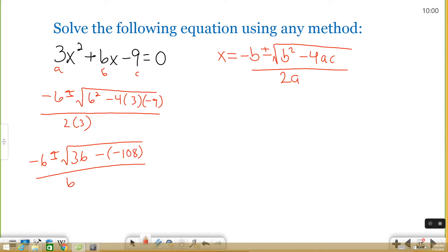Okay, so that's the next step. Let's keep going, keep simplifying. I'm going to jump up here now. We have negative 6 plus or minus square root. 36 minus negative 108 is the same thing as 36 plus 108, which is 144 all over 6. Let's keep going. Negative 6 plus or minus square root of 144 is a perfect square. It's 12, 12 over 6.